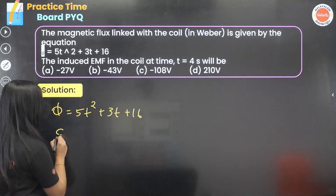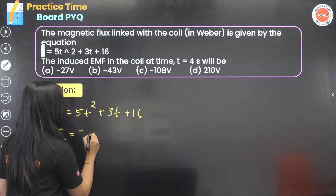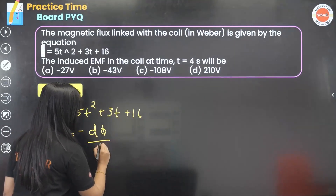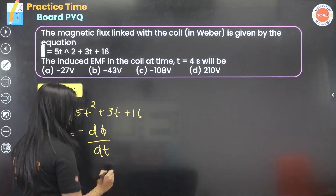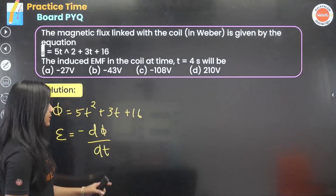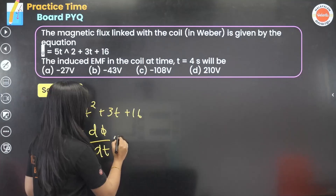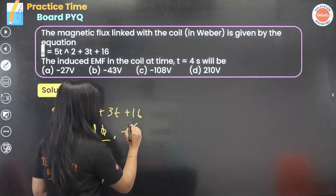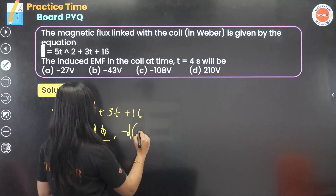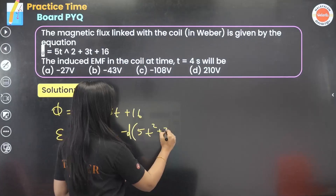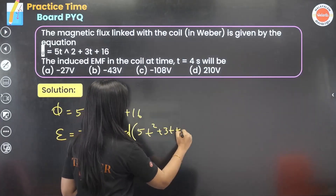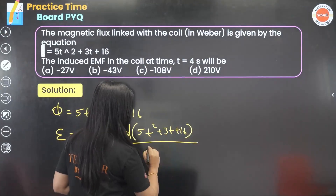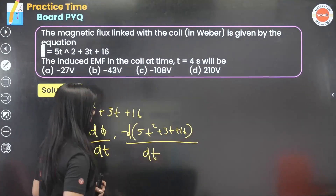So the induced EMF is equal to minus dφ/dt. We are going to differentiate: minus d(5t² + 3t + 16) divided by dt.